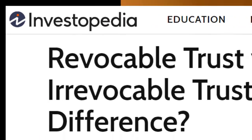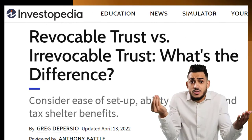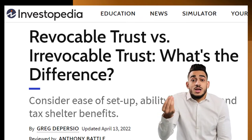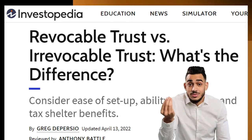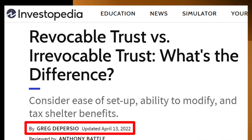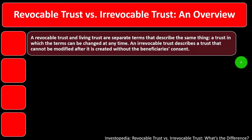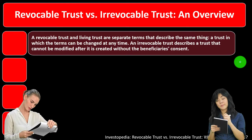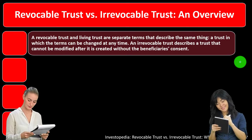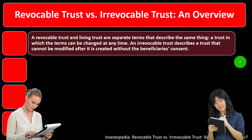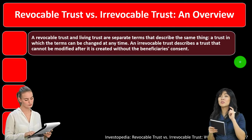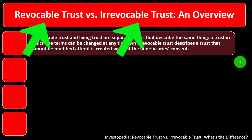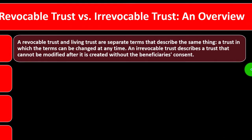Most of this information comes from Investopedia: 'Revocable Trust versus Irrevocable Trust — What's the Difference,' by Greg DeParcio, updated April 13, 2022. In prior presentations we've been looking at estate planning, focusing in on particular tools and parts of estate planning which might be applicable depending on your personal situation — this time being the revocable trust and the irrevocable trust.